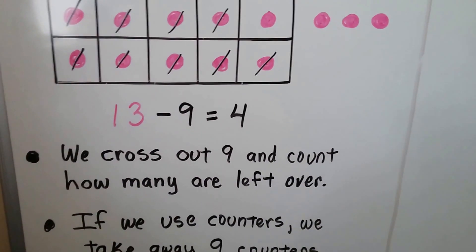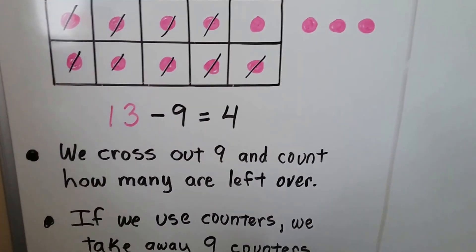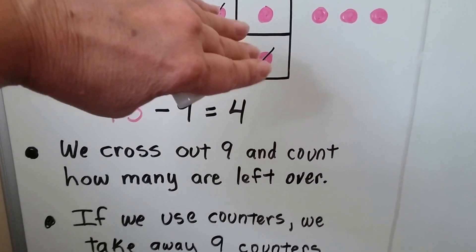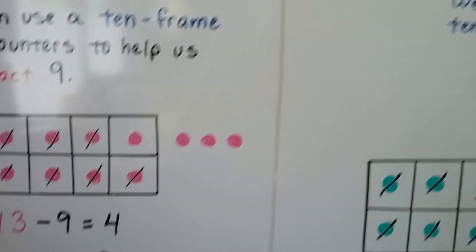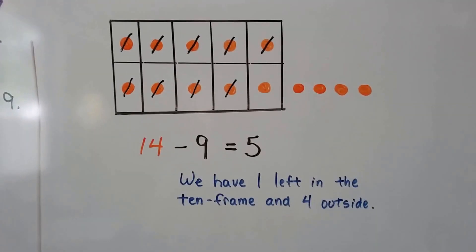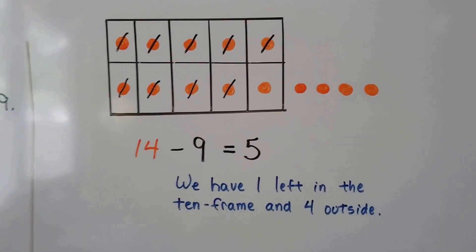If we use counters, we take away 9 counters. We would just take those 9 away. And there'd be 4 left. We can use a 10 frame and 10 to help us subtract 9.